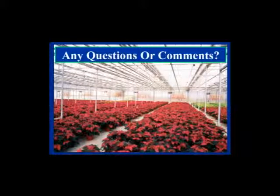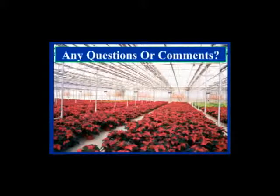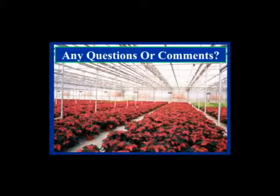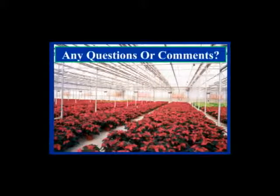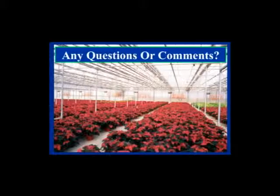Question: A grower has what they call robber flies on their plants at shipping — even though they're beneficial, buyers may consider them a pest. Any thoughts? Answer: The individual likely means hunter flies, which are very effective at killing shore fly and fungus gnat adults — they reside on leaves and fly off to grab passing prey. The problem is that hunter flies resemble shore fly adults, so the end user receiving the poinsettias may mistake them for shore flies when they are actually beneficial hunter flies.